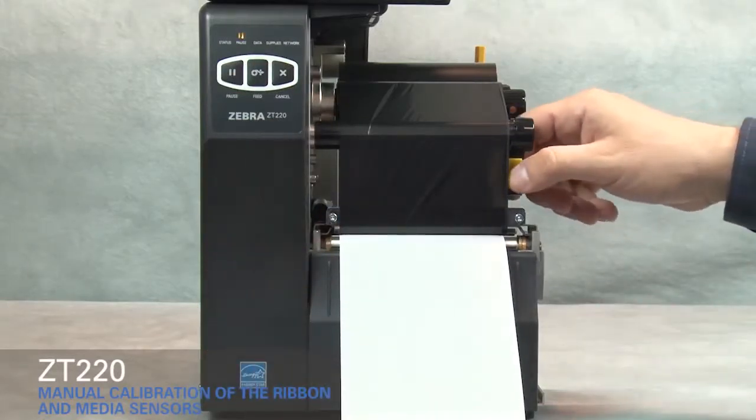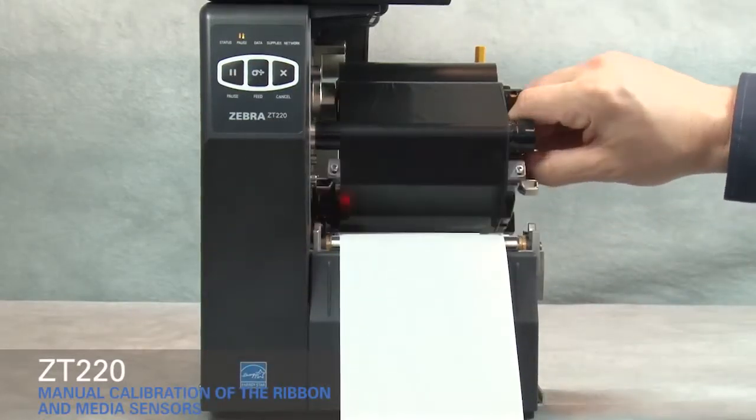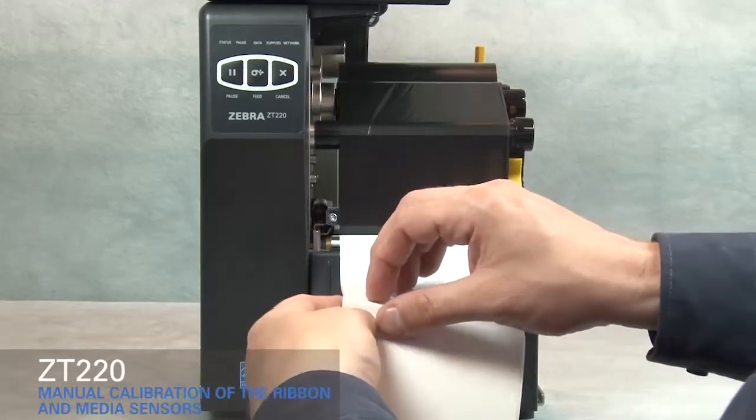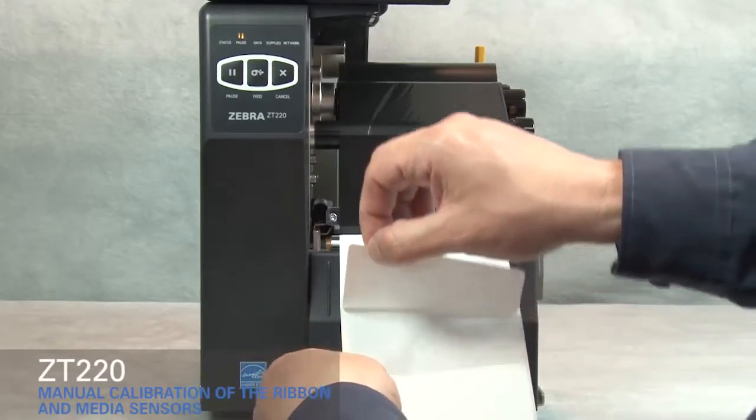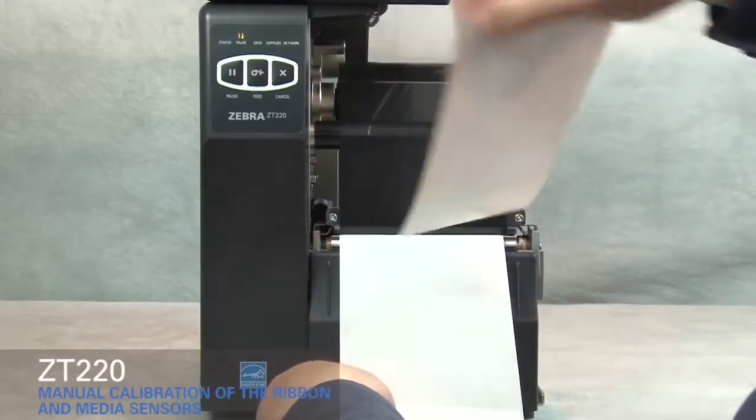Rotate the gold printhead lever up to open the printhead. Pull media out and remove about six inches or 150 millimeters of labels from the liner.